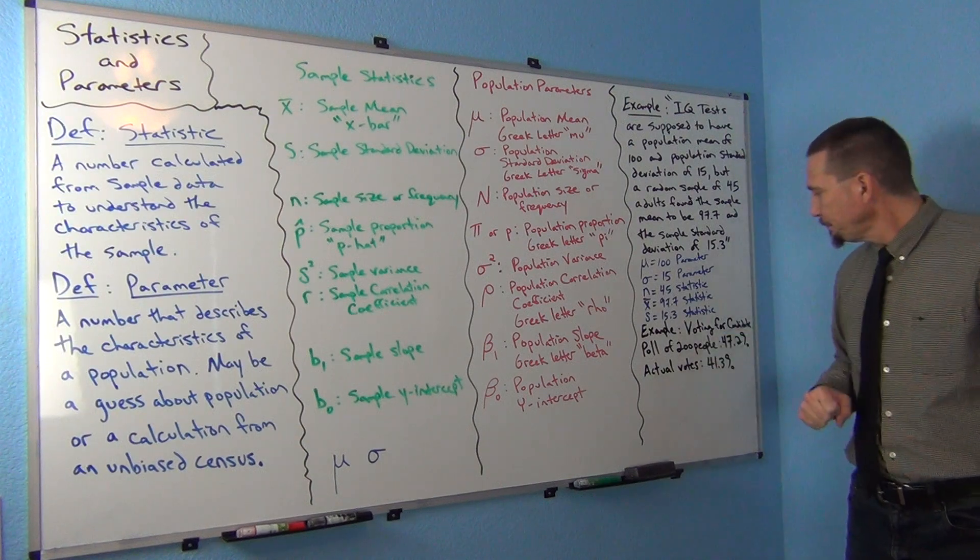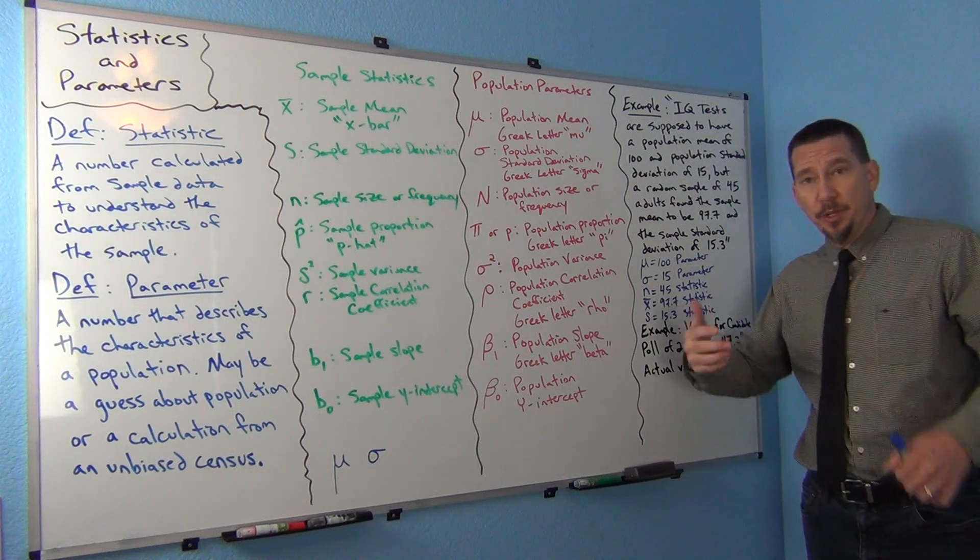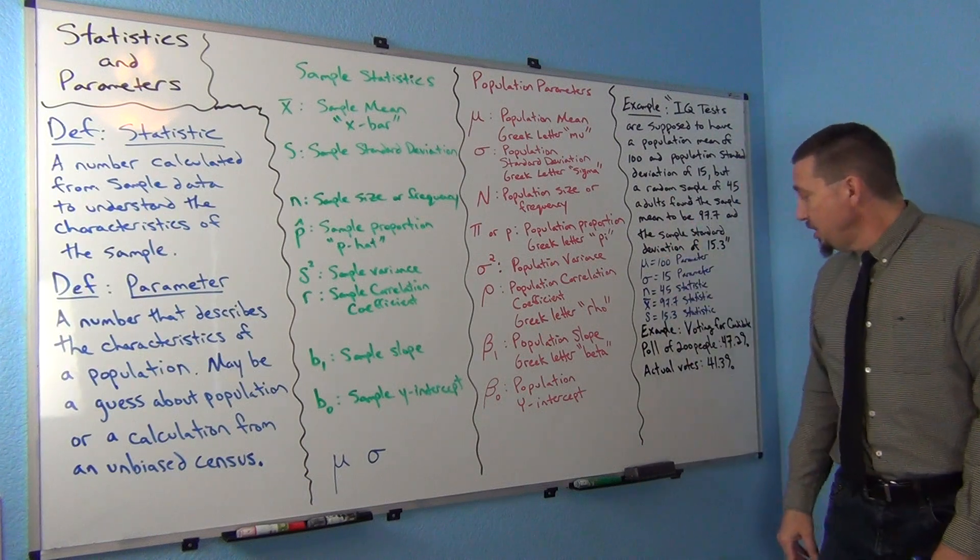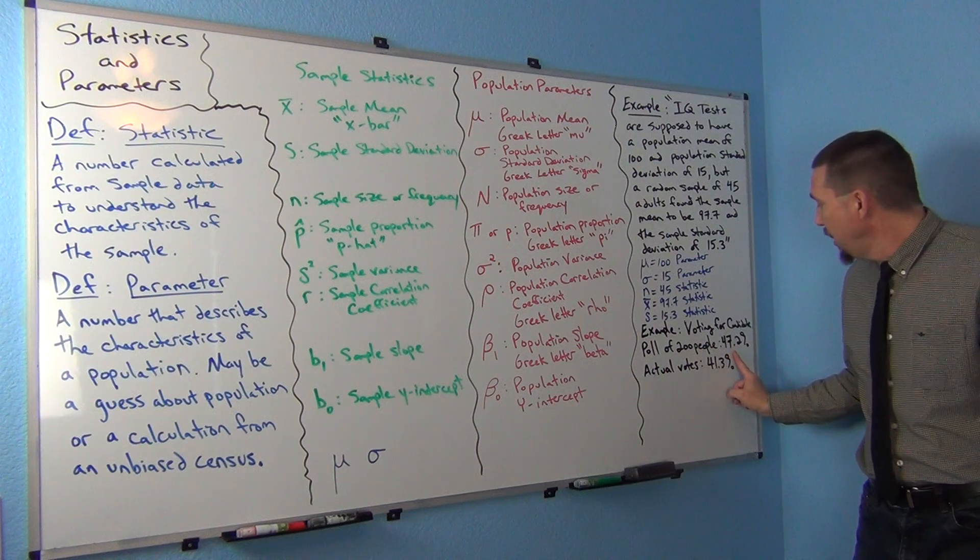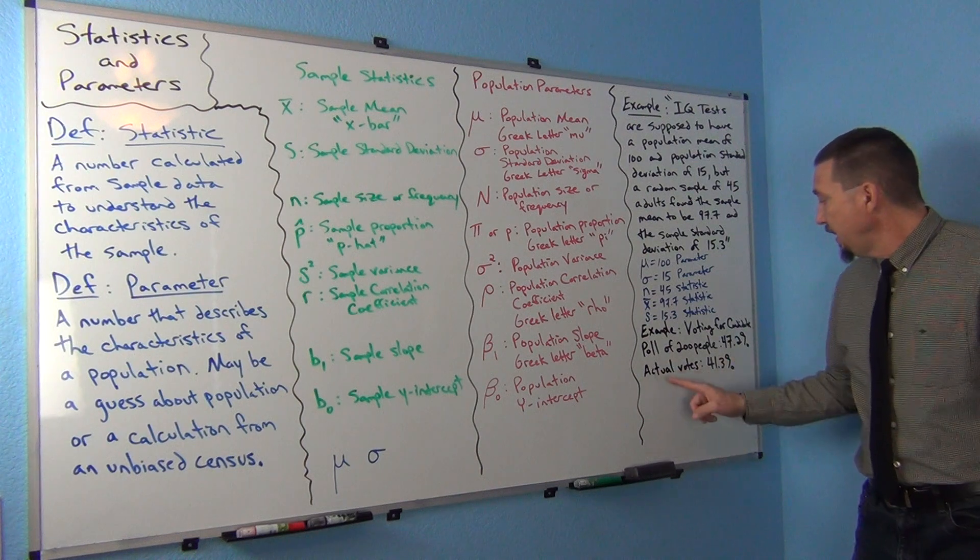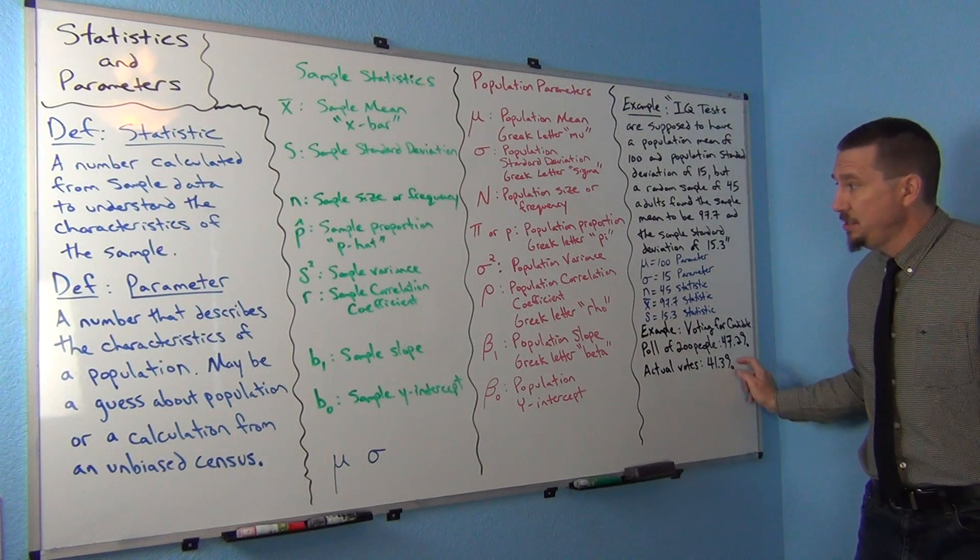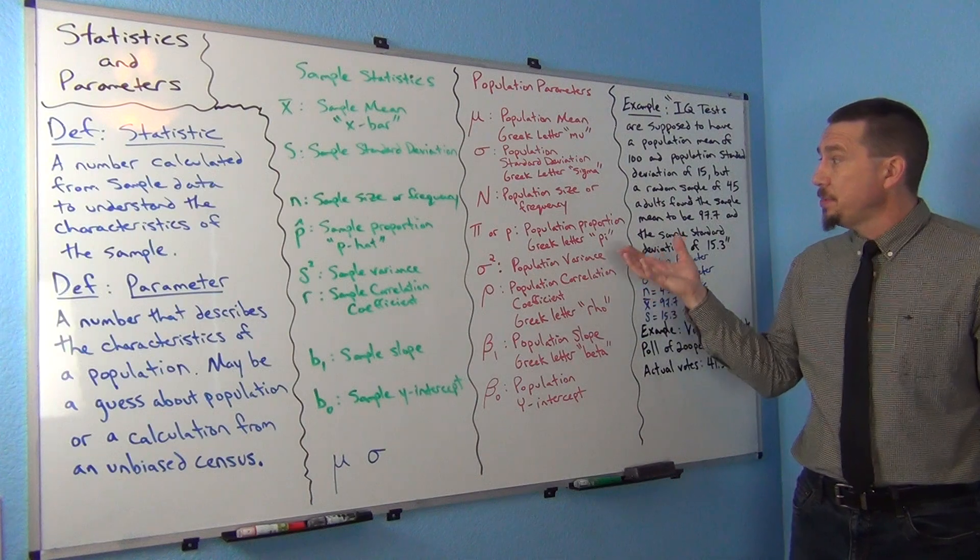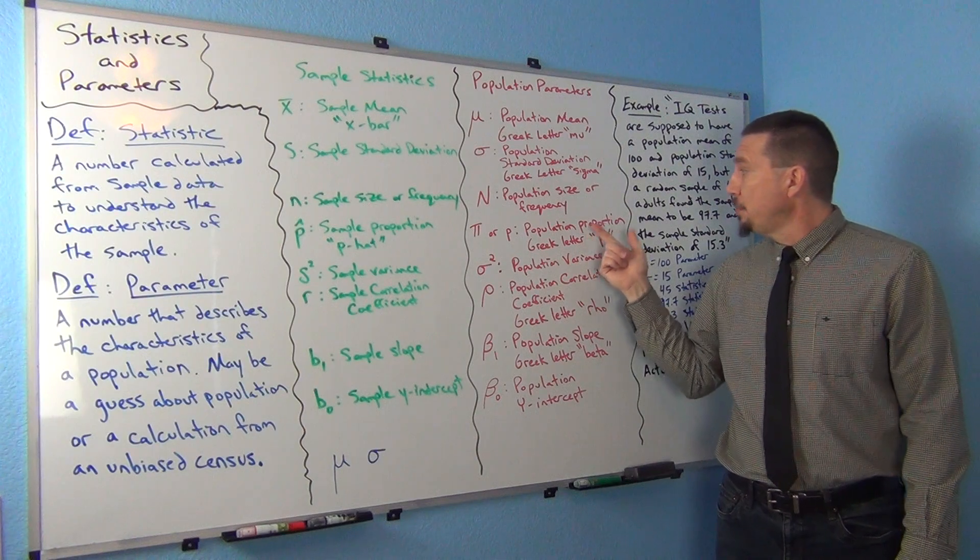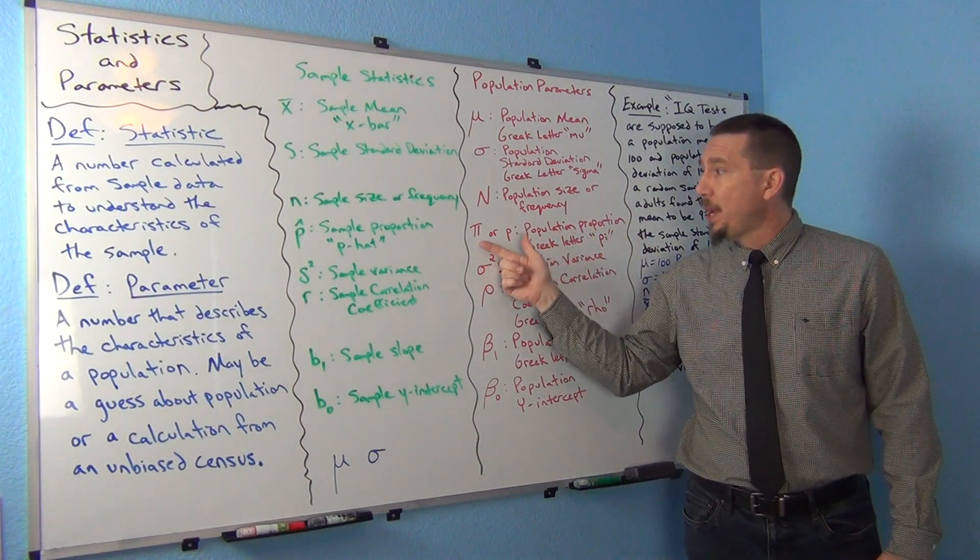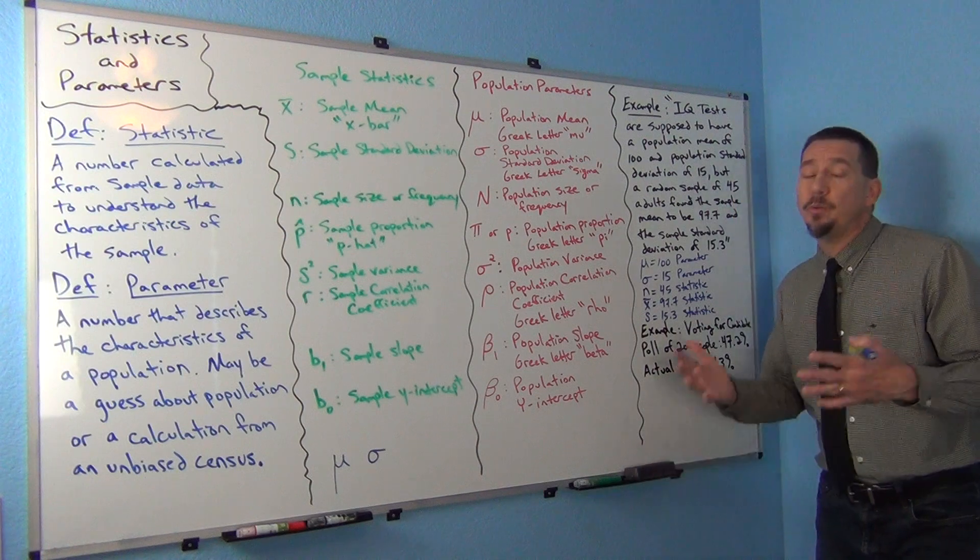Let's look at another one, a very common one, voting. They're trying to see what percentage of people are going to vote for a candidate. They took a poll of 200 people, and they found that 47.2% of people in the poll plan on voting for the candidate. The actual votes on voting day was 41.3%. Notice we have two percentages. There's only really letters here that represent percentages as either P-hat or pi or P. Population percentage proportion would be pi and sample proportion would be P-hat. It's just a matter of thinking about what's the population and what's the sample.